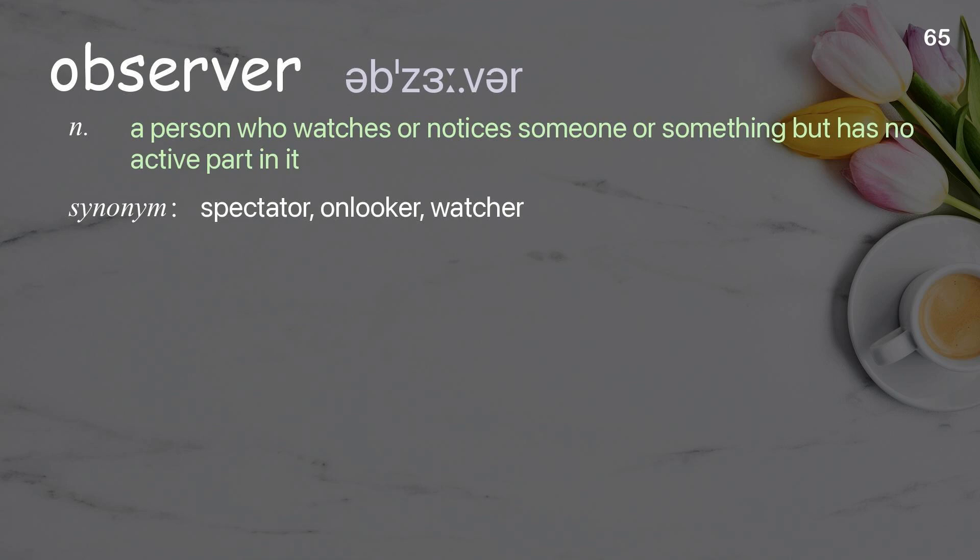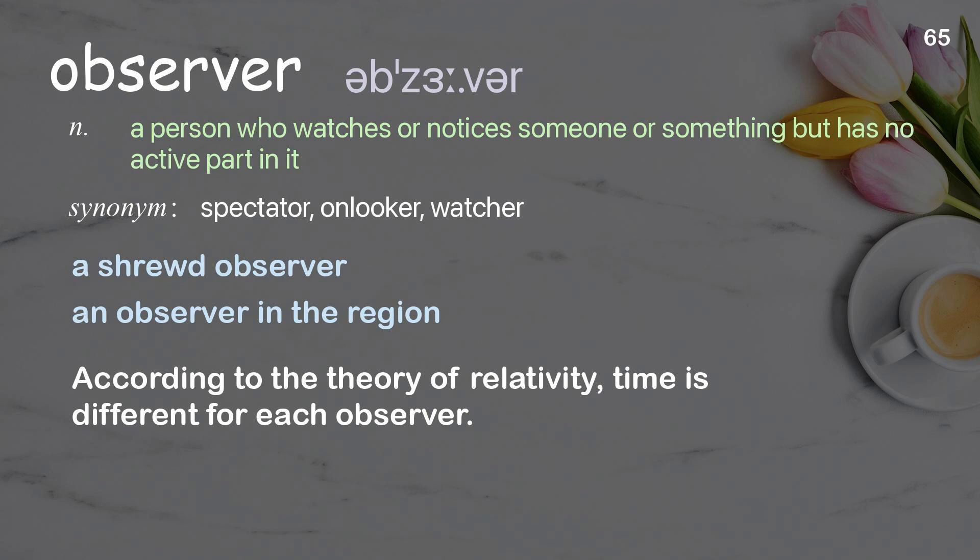Observer: A person who watches or notices someone or something but has no active part in it. Examples: A shrewd observer. An observer in the region. According to the theory of relativity, time is different for each observer.